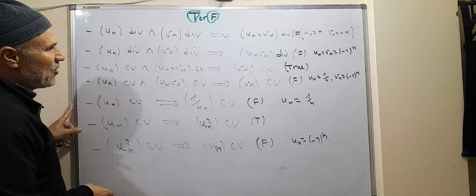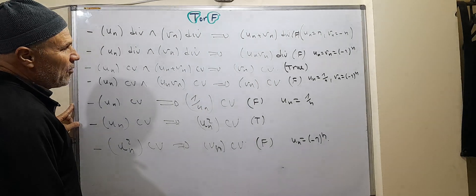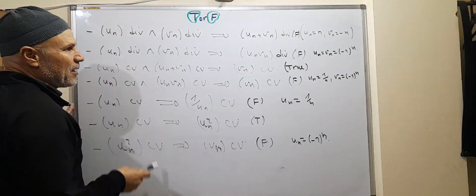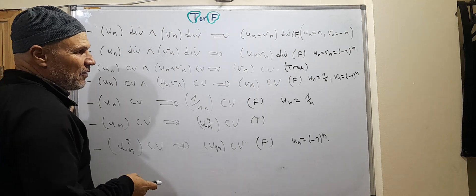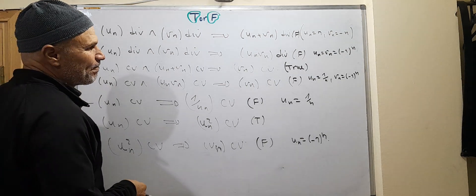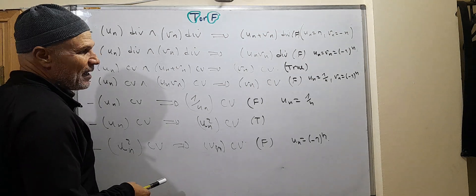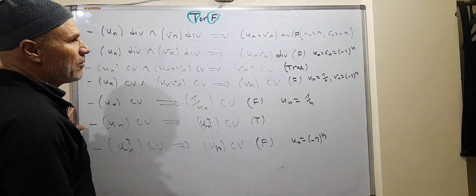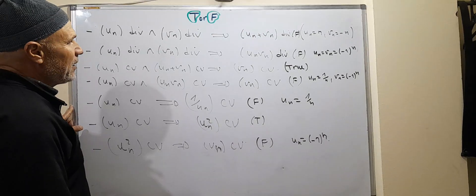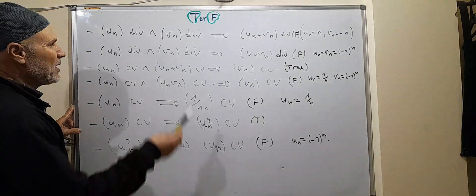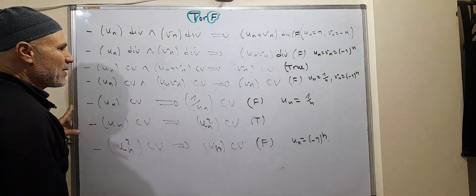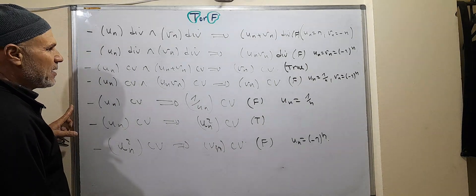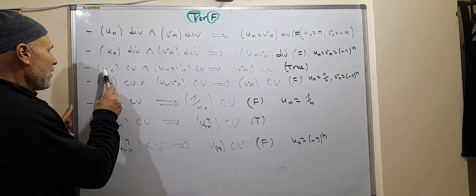The second statement: if uN is divergent and vN is divergent, how about the product? The answer is false. If we take uN equal to vN equal to (-1)^N, the product is (-1)^(2N), which equals 1. This is convergent. So the product of two divergent sequences is not necessarily divergent.